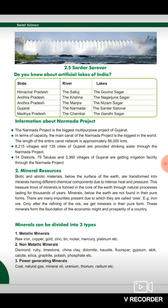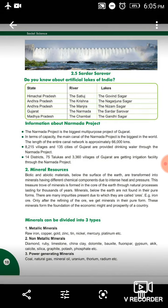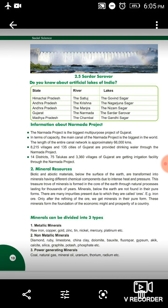Minerals can be divided into three types. First, metallic minerals: raw iron, copper, gold, zinc, tin, nickel, mercury, platinum, etc. Second, non-metallic minerals: diamond, ruby, limestone, china clay, dolomite, bauxite, fluorspar, gypsum, mica, calcite, silica, graphite, potash, phosphate, etc. Third, power-generating minerals: coal, natural gas, mineral oil, uranium, thorium, radium, etc. We will discuss their uses later.